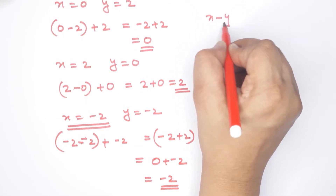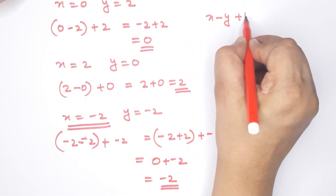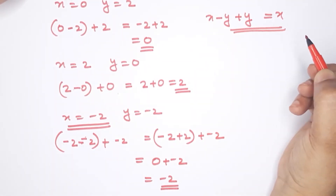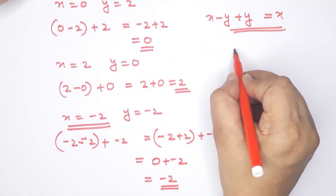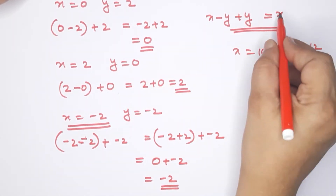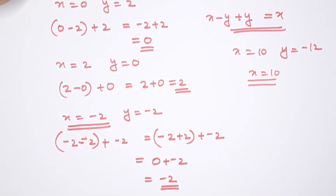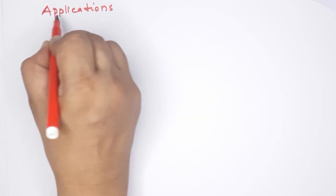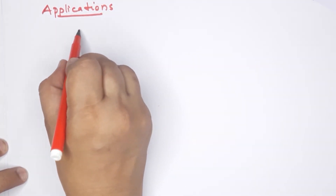So x minus y, open bracket, plus y — if we work this out, the answer is x. Then if x equals 10, we can verify. Our application is confirmed.